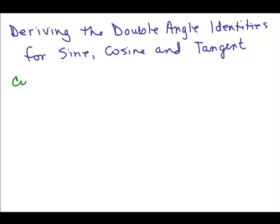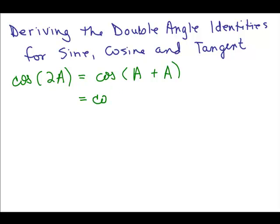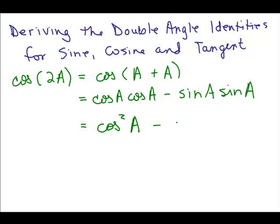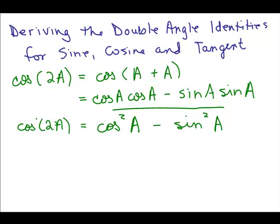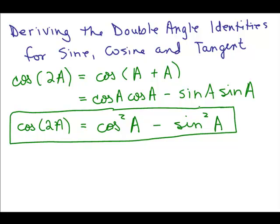So what would the cosine of 2A be? If we have some angle A and we know the cosine of that, how would we know the cosine of 2A? We can do this by rewriting 2A as A plus A and then use the formula for the cosine of a sum of two angles: cosine of the first times cosine of the second minus sine of the first times sine of the second, which gives us cosine squared A minus sine squared A. So this is an identity: cosine of 2A equals cosine squared A minus sine squared A.